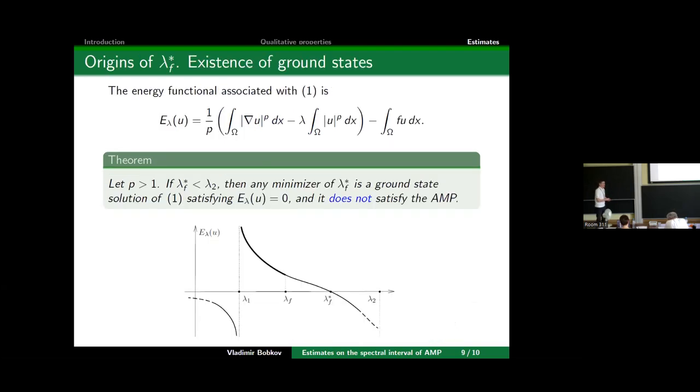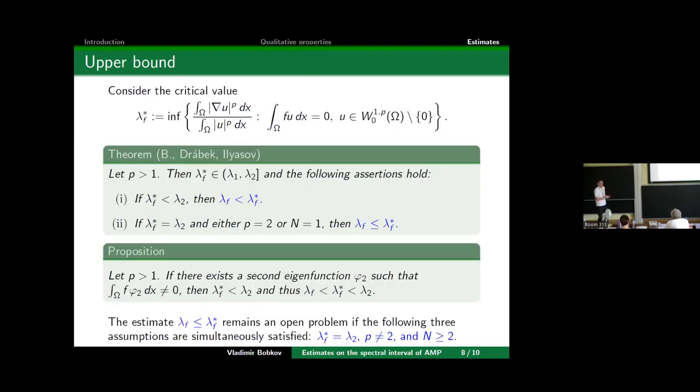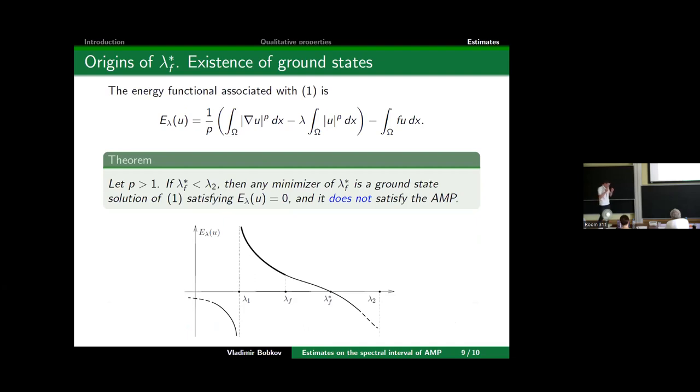Let me say where this λ_f* came from—why this critical value and not another. The intuition is the following: this value appears from the investigation of the branch of ground state solutions to our initial problem. Our problem is of variational type; there exists a corresponding energy functional, and the ground states are at least critical levels of this energy functional. The story is that if we are a little bit to the left of λ₁, the energy is strictly positive, and then it decays. Under the assumption that λ_f* is smaller than λ₂, we know that this branch of ground states intersects the zero level.